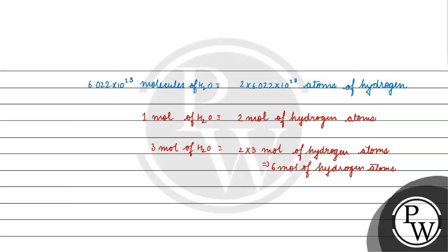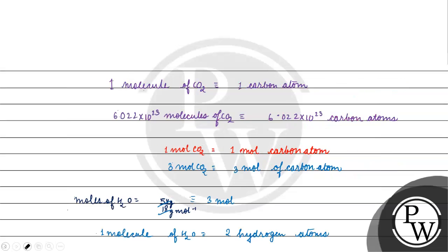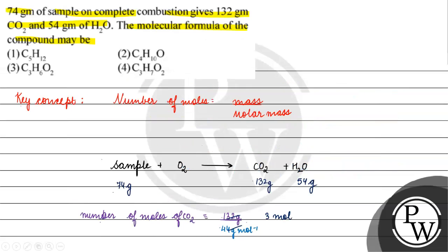So the ratio of carbon to hydrogen is 3 to 6, meaning the compound has 3 carbon atoms and 6 hydrogen atoms. Looking at the options, this matches Option 3, C3H6O2. I hope you understood it well. Thank you and all the best.